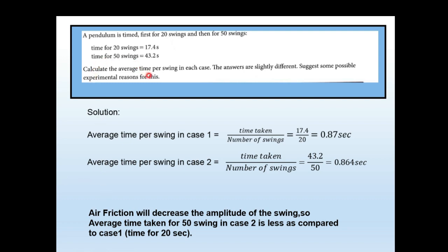The answers are slightly different. For 20 swings the average time per swing was 0.87 seconds, slightly reduced to 0.864 seconds for 50 swings. A possible experimental reason: air friction will decrease the amplitude of the swing over time, so the average time taken for 50 swings in case 2 is slightly less compared to case 1.